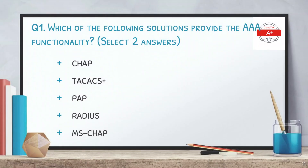The first question is: which of the following solutions provide the AAA functionality? AAA stands for authentication, authorization, and accounting. We have to select two answers. The options are CHAP, TACACS+, PEP, RADIUS, and MSCHAP (Microsoft CHAP). The correct answers are TACACS+ and RADIUS.